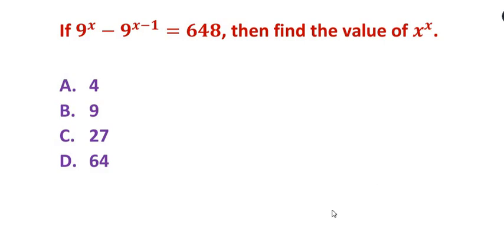Hello and welcome to my channel. In this video we are going to solve a question on indices. The question is: if 9 to the power of x minus 9 to the power of x minus 1 is equal to 648, then find the value of x to the power of x.